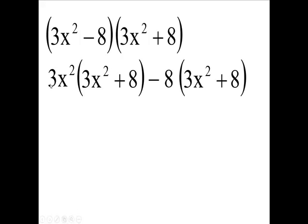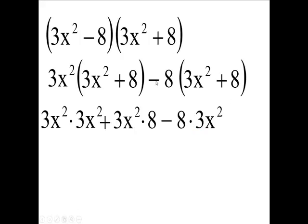Now you have 3x squared times 3x squared. Then you'll have a plus and you'll have 3x squared times 8. Then you'll have a minus and you'll have 8 times 3x squared. Then you'll have a minus 8 times a plus 8 will be a minus 8 times 8.